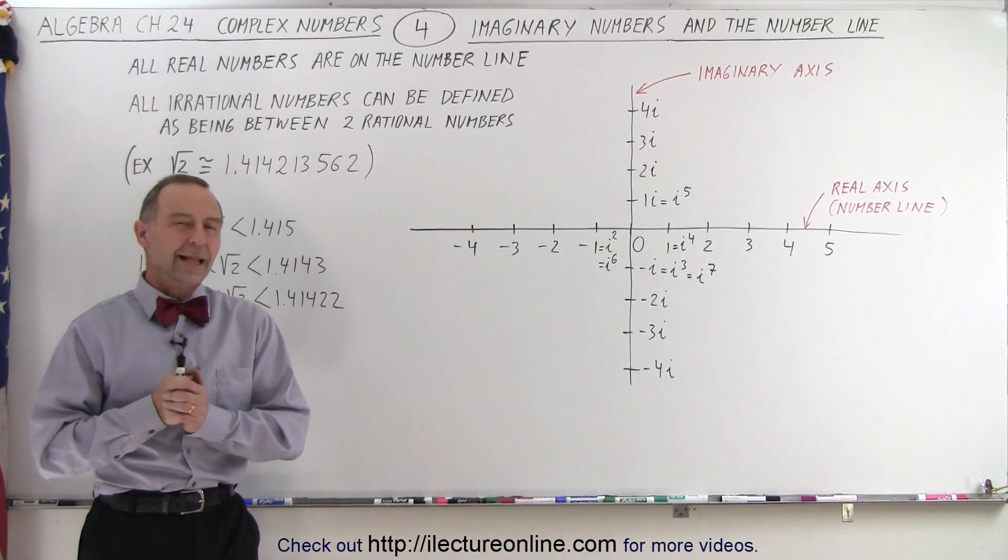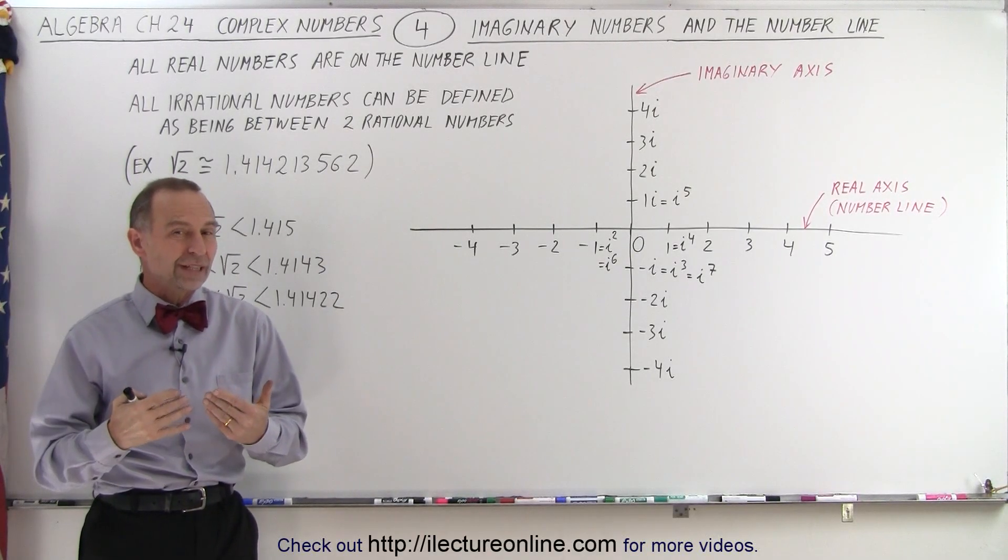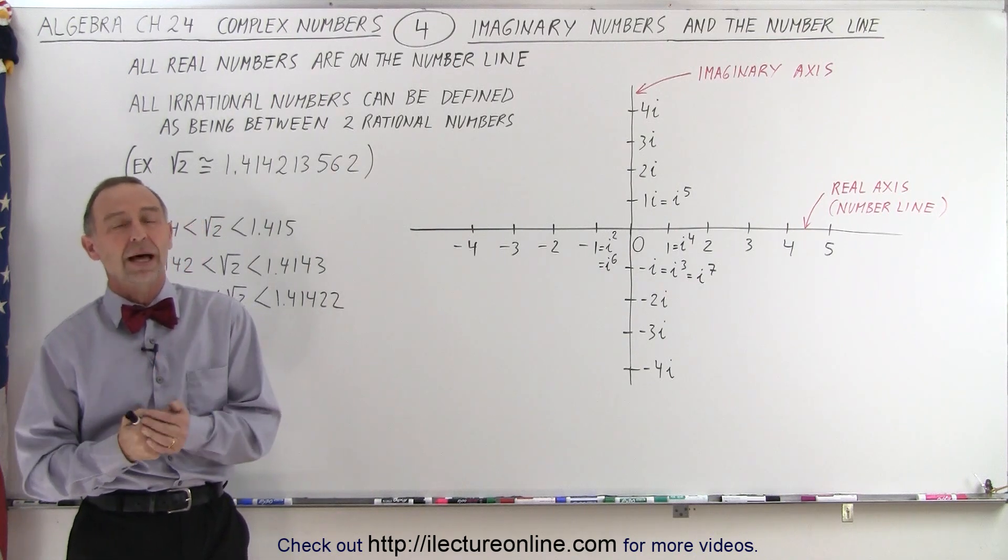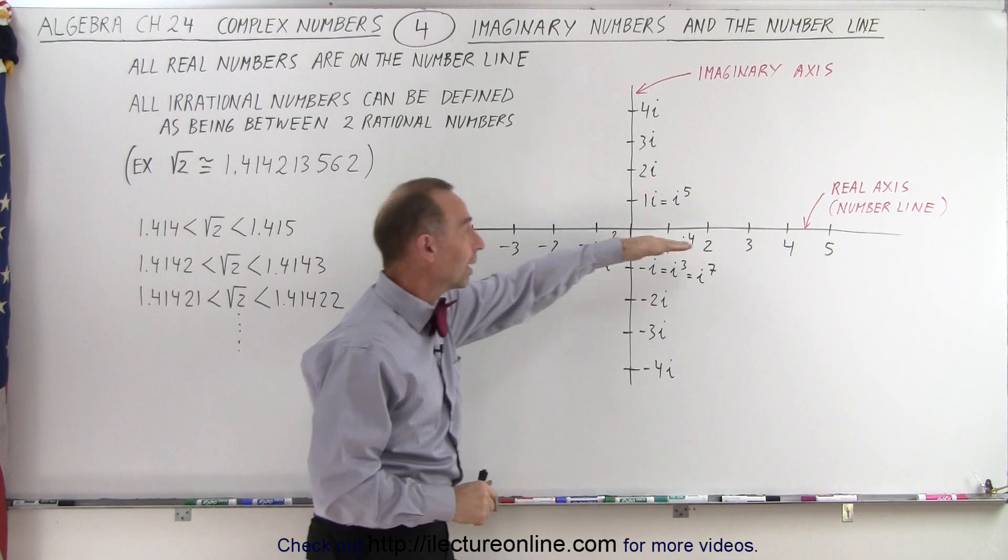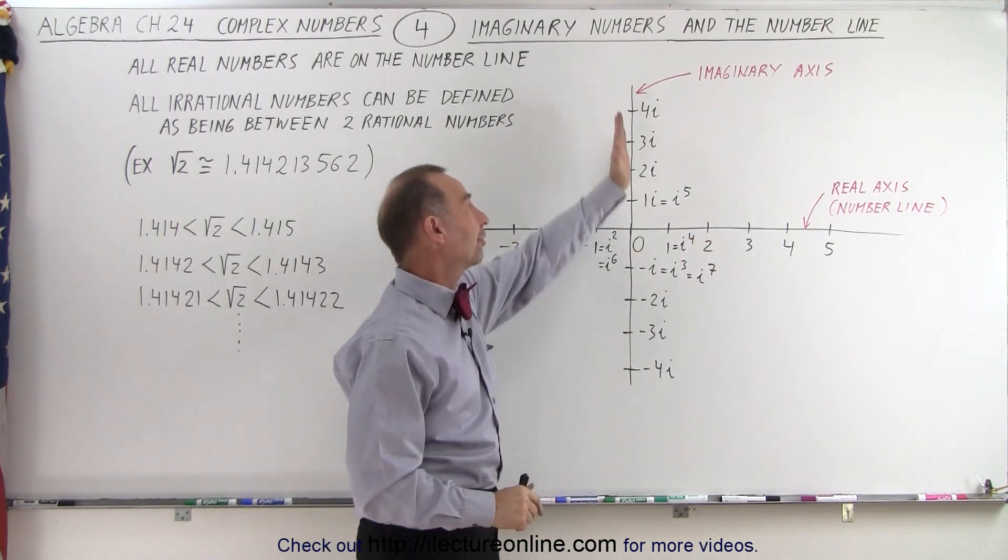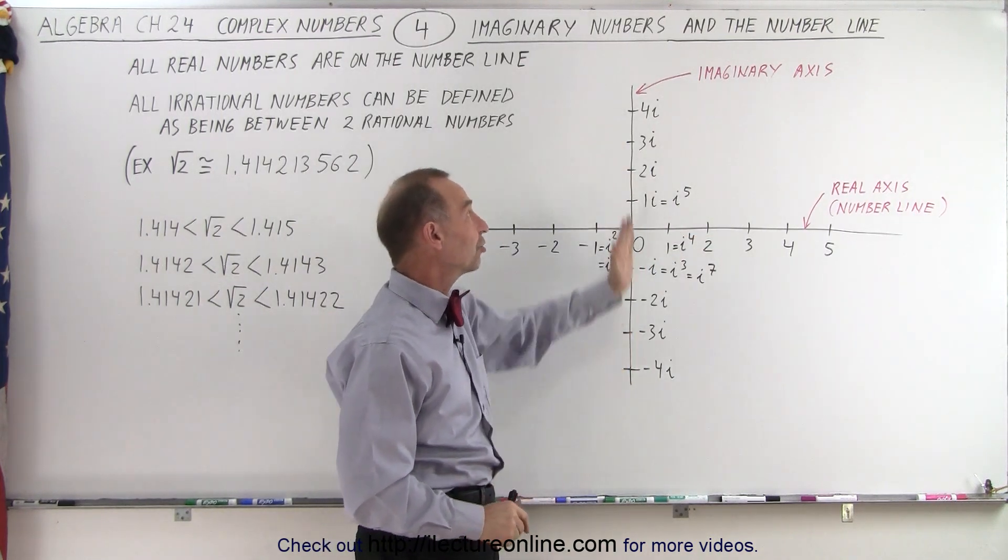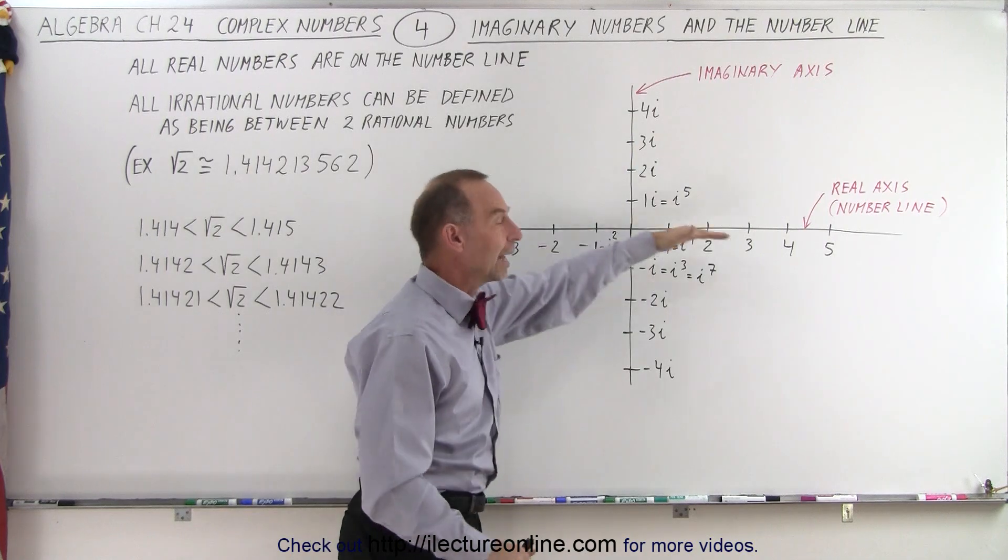Welcome to Electron Line. Now let's take a look at imaginary numbers in context with the number line. Yes, there are two number lines. There is the real number line and there is the imaginary number line. We call that the imaginary axis and the real axis.